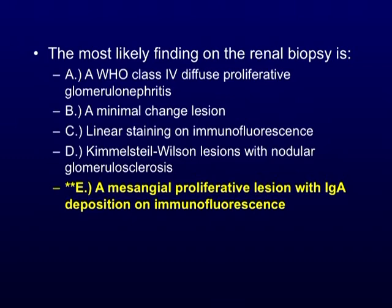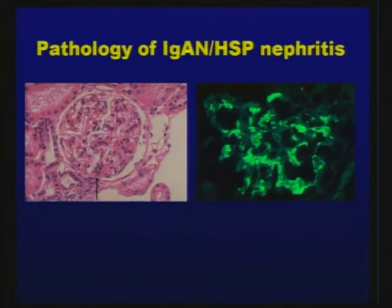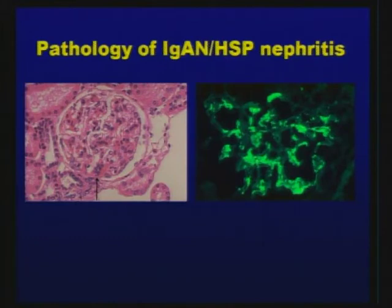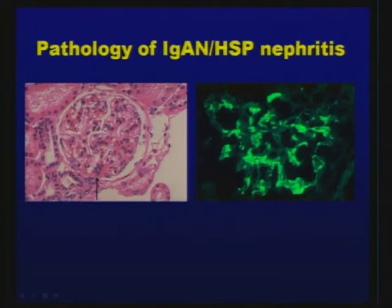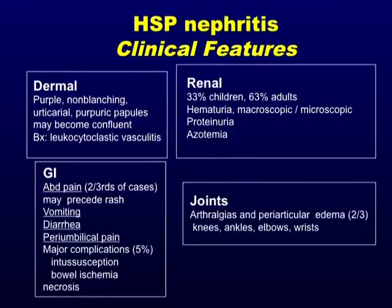This patient has IgA nephropathy / HSP nephritis — Henoch-Schönlein purpura. The particular lesions on skin biopsy show up as leukocytoclastic vasculitis. The syndrome of leukocytoclastic vasculitis presenting with abdominal pain, arthralgias, and kidney disease equals Henoch-Schönlein nephritis. The biopsy shows a mesangio-proliferative GN. On immunofluorescence you see very strongly positive IgA staining. Anybody with HSP nephritis has IgA on staining. HSP nephritis is a common board question — you need to know this as a clinical syndrome.